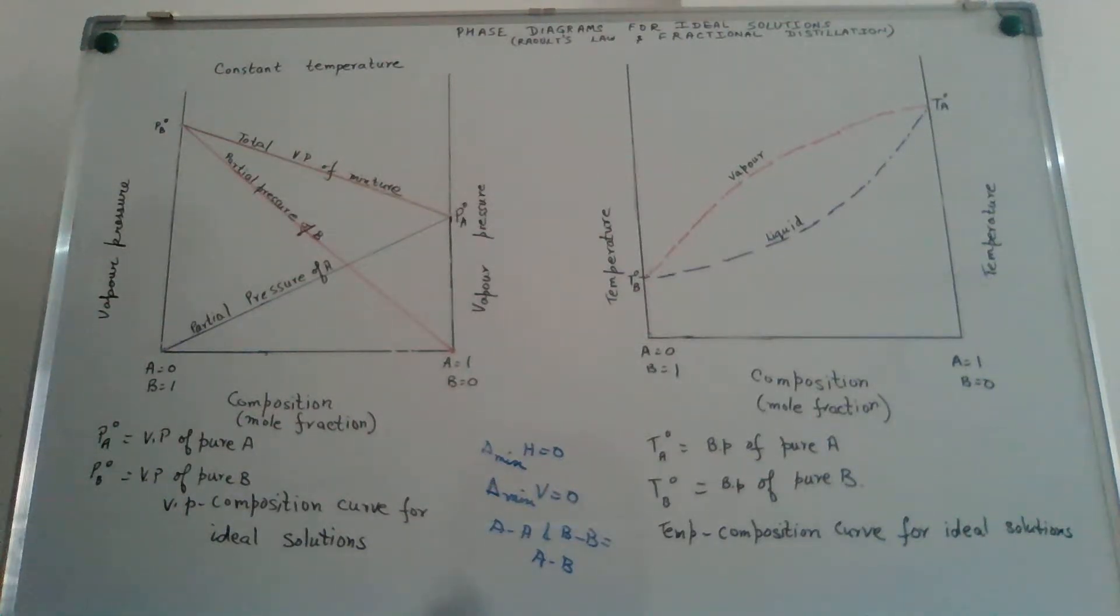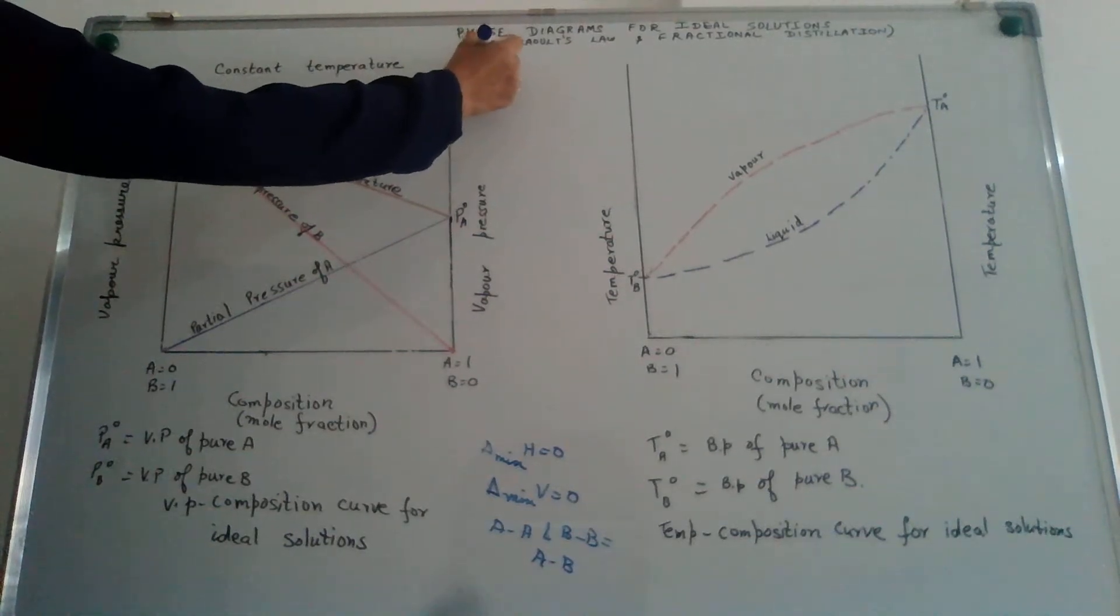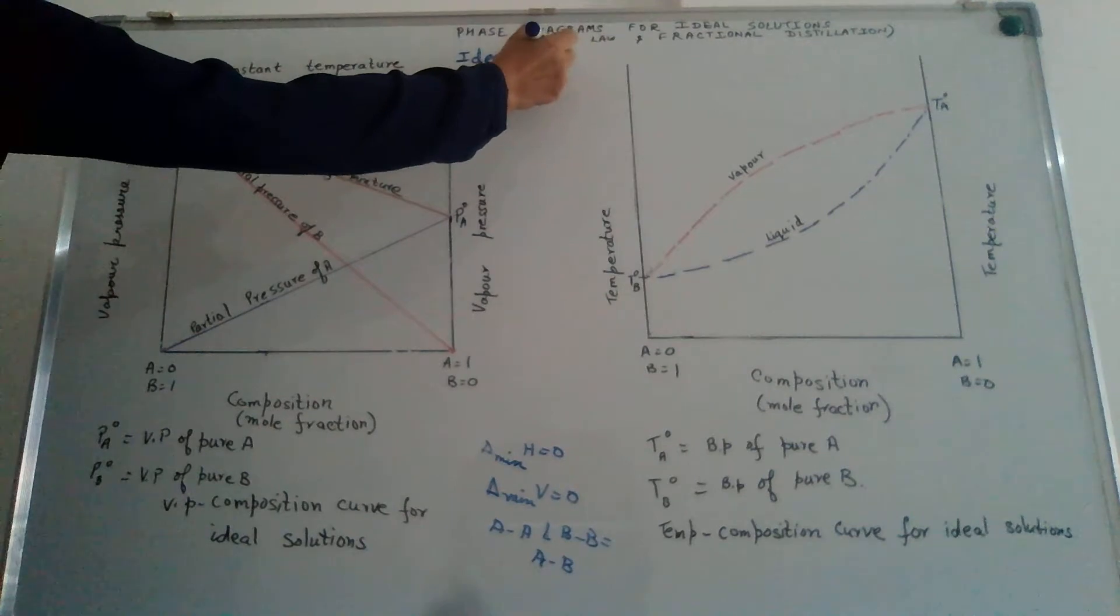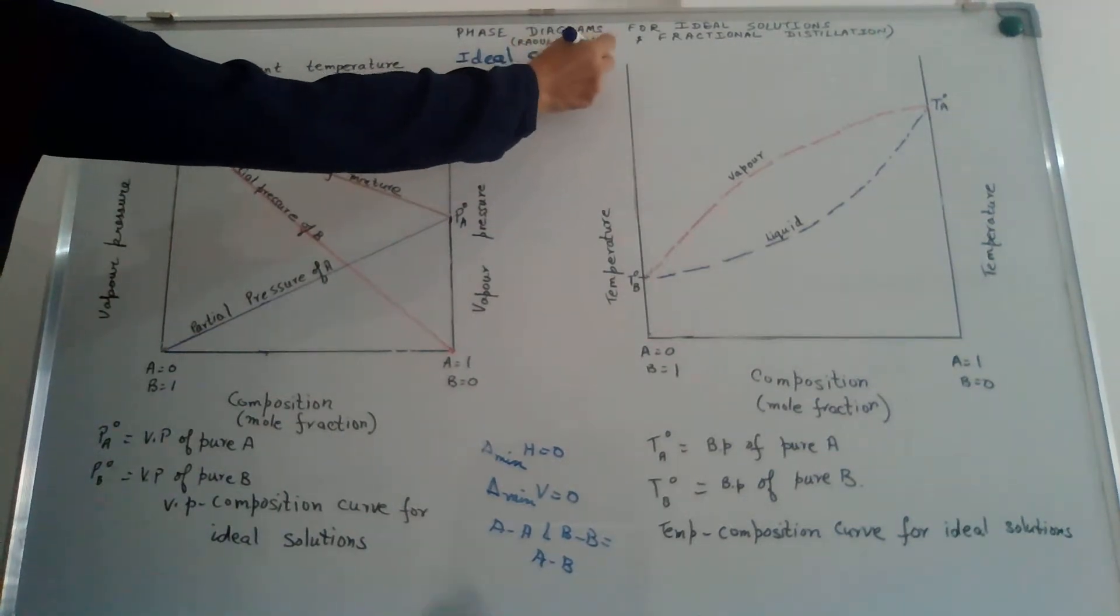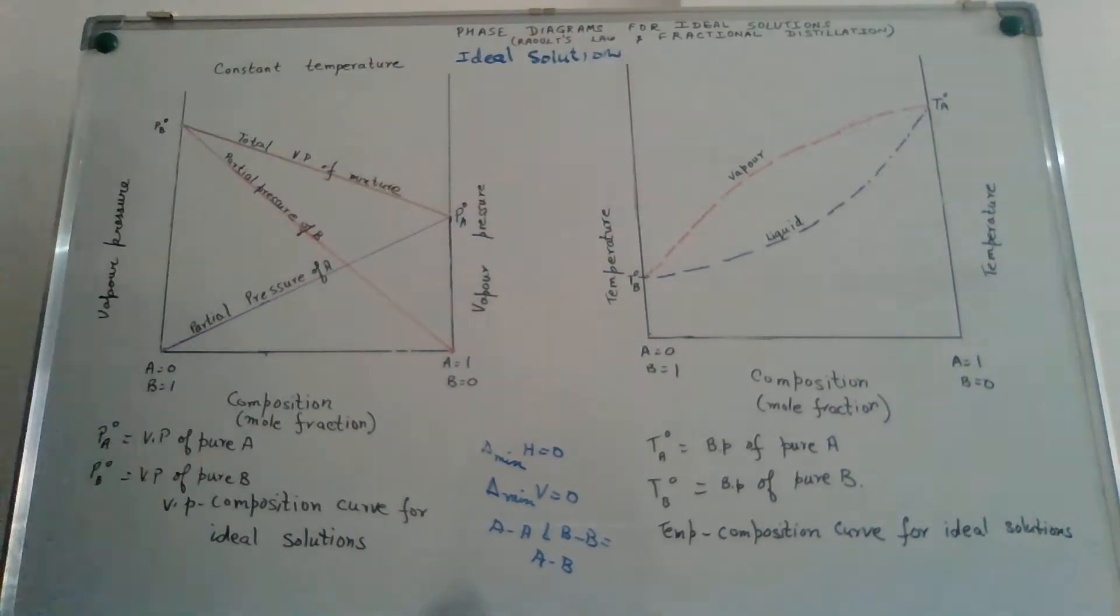Hello students. Today we are going to discuss ideal solutions and graphs related to them. This becomes a very confusing topic because there are a lot of graphs and interlinking. You have to understand it from thermodynamics point of view and chemical point of view. But try and understand that the behavior of liquids is an interplay of all these different things.